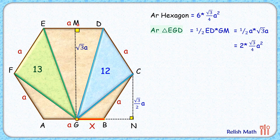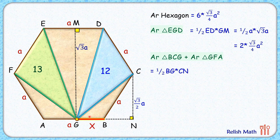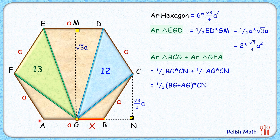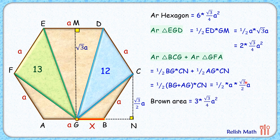Now for triangles FAG and GBC: their area is half of base times height. For triangle FAG, the base is GB and height is CN. For triangle GBC, the base is AG and the same height CN applies. Adding these two areas gives half of (BG + AG) times CN. Since BG + AG equals 'a' and CN is √3/2·a, the combined area equals √3/4·a², equivalent to one equilateral triangle.